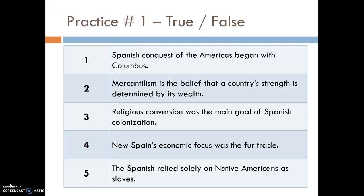Now answer these practice questions in your notes — five true-or-false questions. Number one: the Spanish conquest of the Americas began with Columbus. Number two: mercantilism is the belief that a country's strength is determined by its wealth. Number three: religious conversion was the main goal of Spanish colonization. Number four: New Spain's economic focus was the fur trade. Number five: the Spanish relied solely on Native Americans as slaves. Pause the video if you need to go back and check your notes.